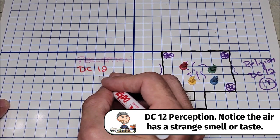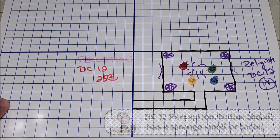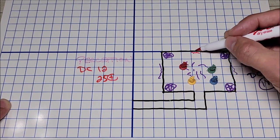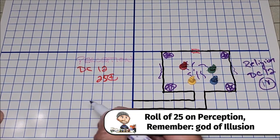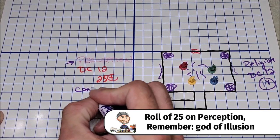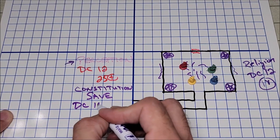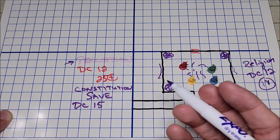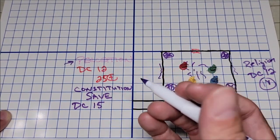If characters roll exceptionally well, let's go with a 25 on the perception, then I'm going to allow them to notice that there seems to be a little bit of wavy or glitchiness to this section of the wall to the north. After the results of the perception check I want everyone to make a constitution saving throw and I'm going to give this a DC 15. So what's going on is this entire room is filled with a colorless gas that has a tangy smell or taste to it.